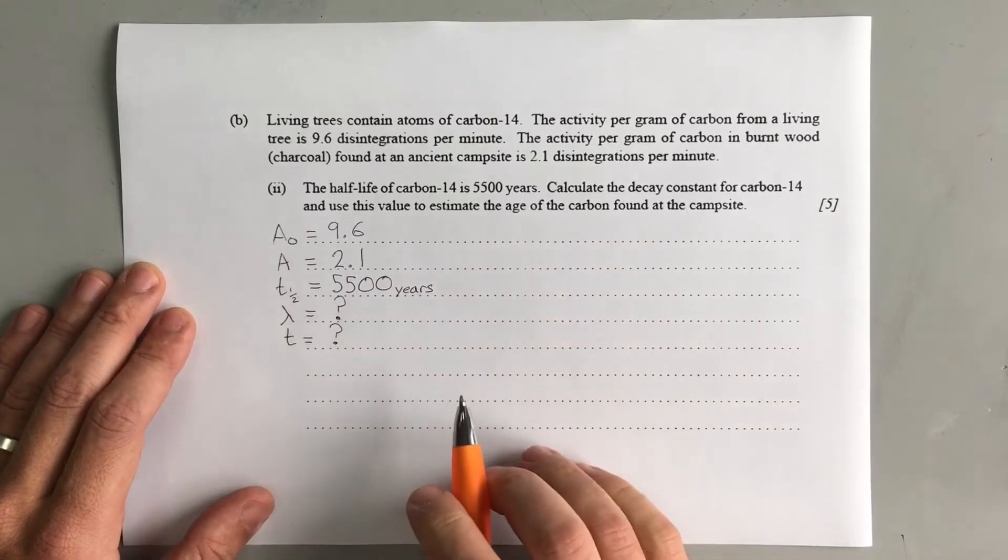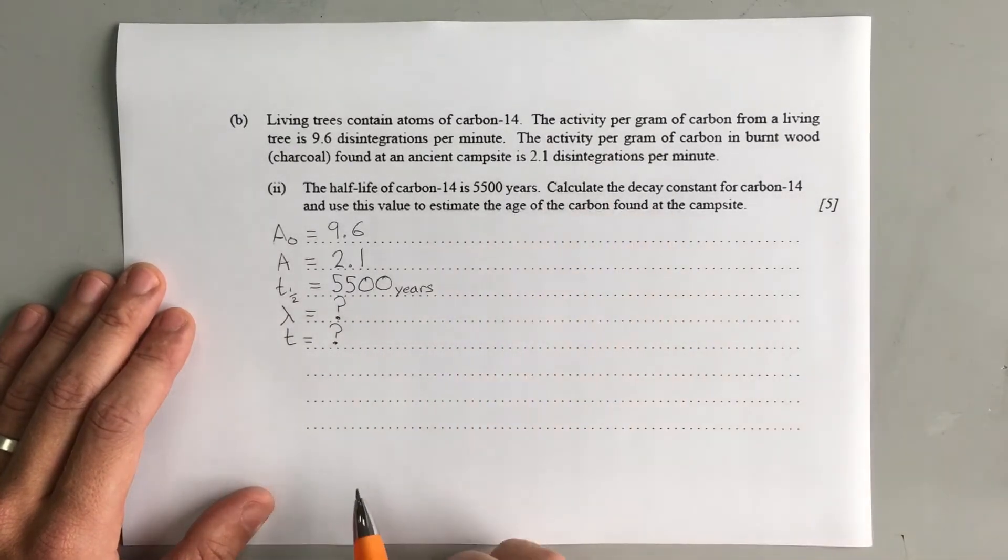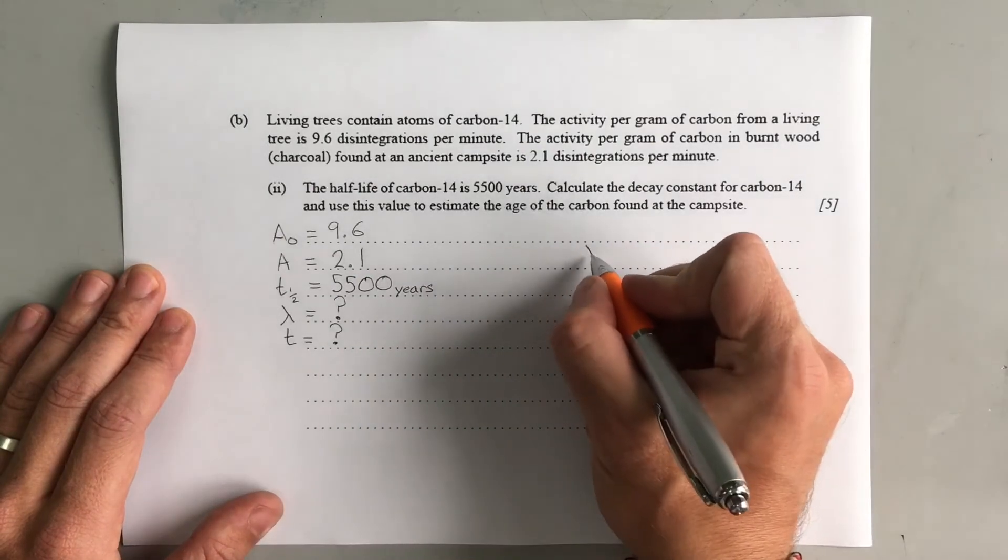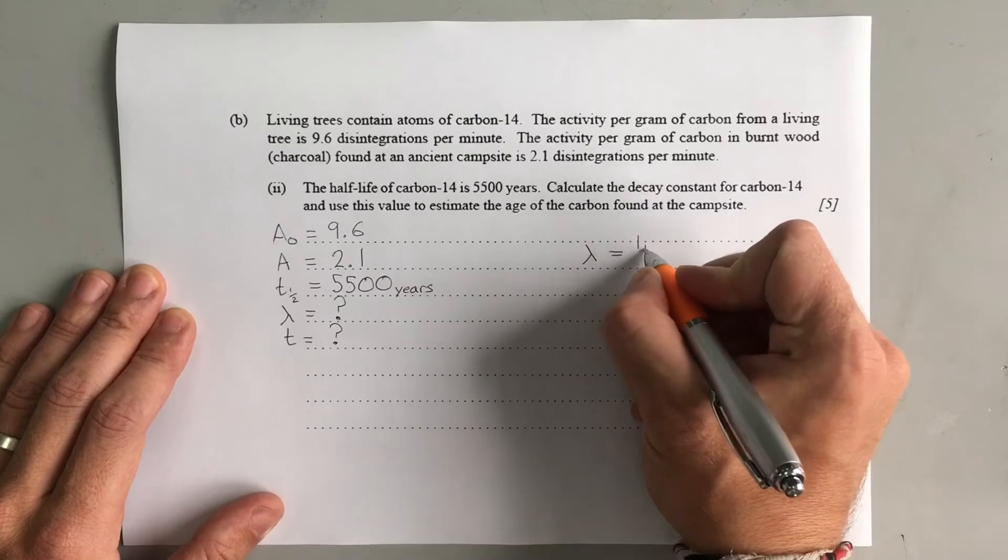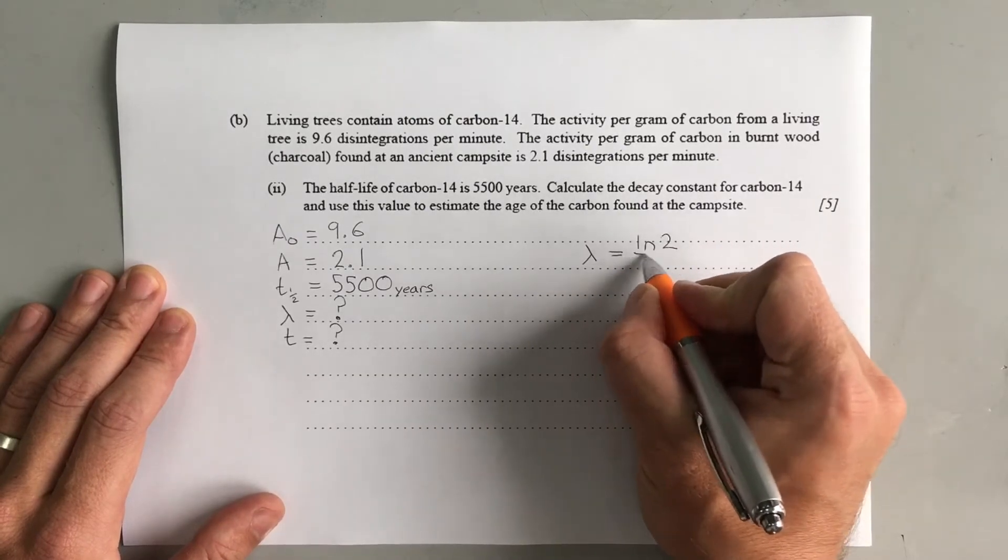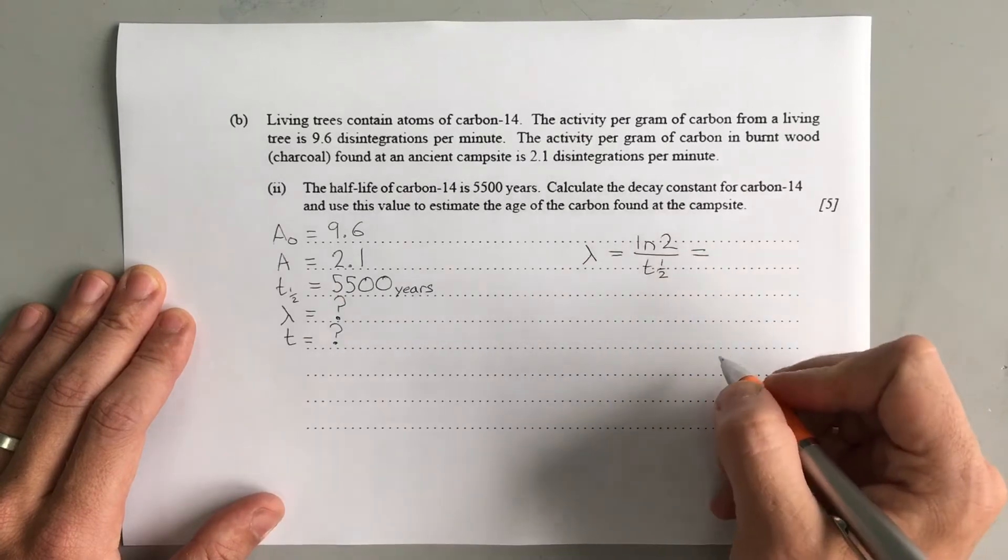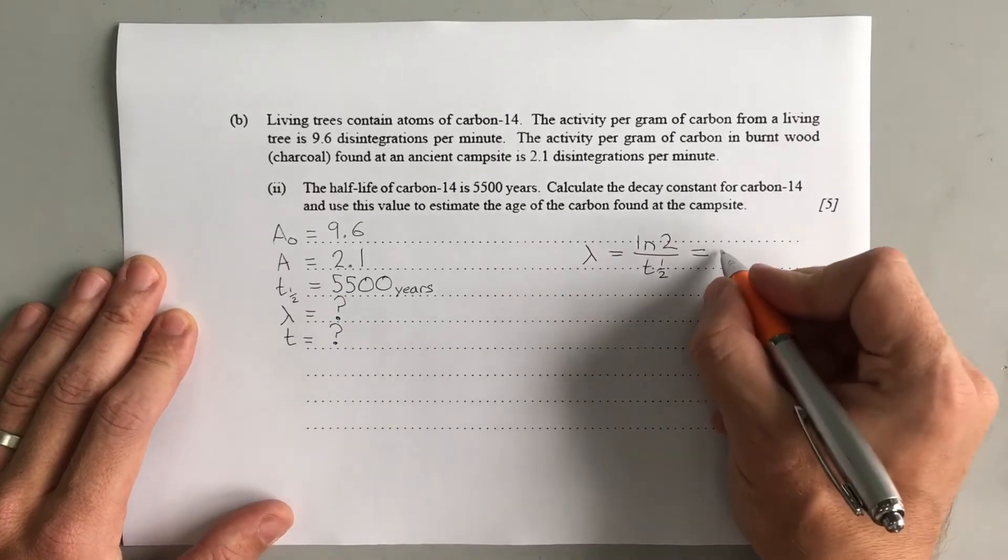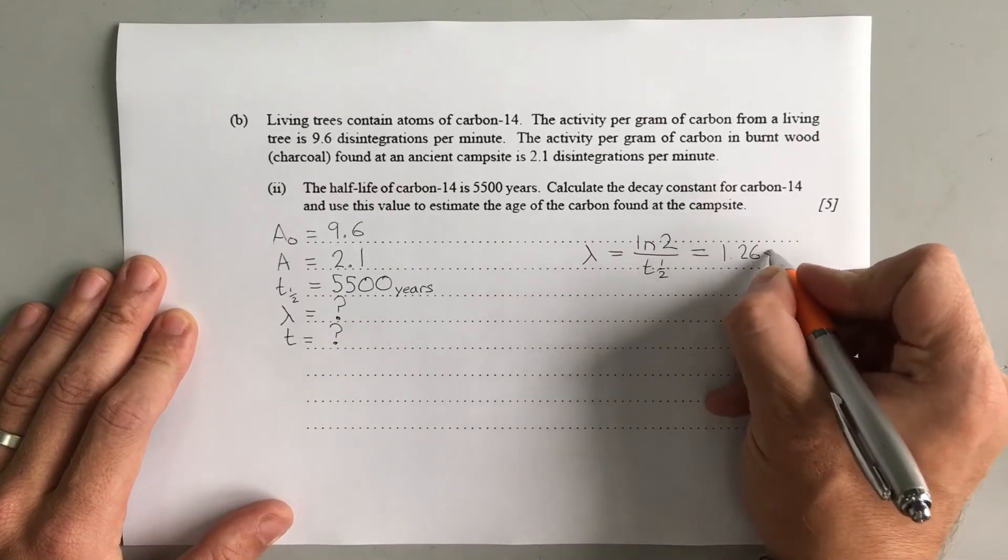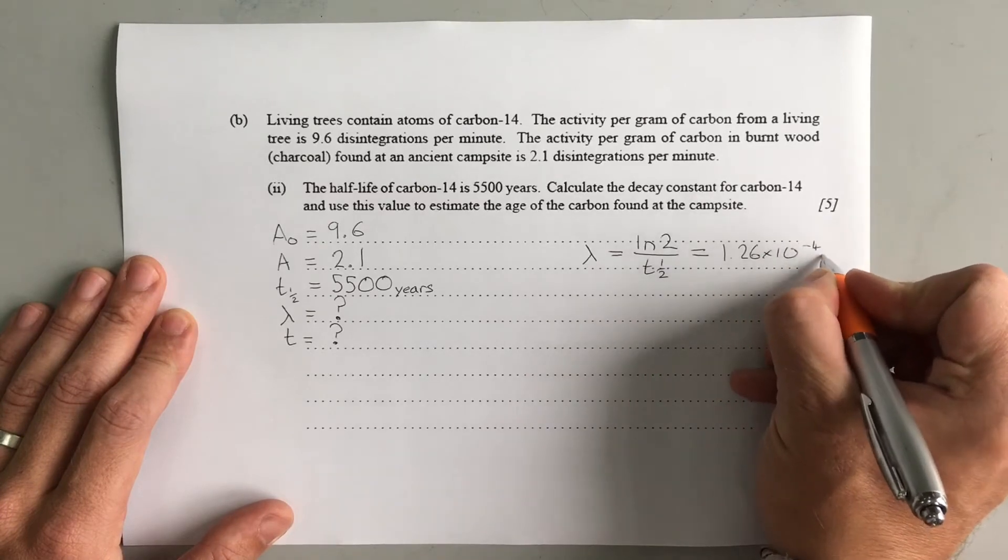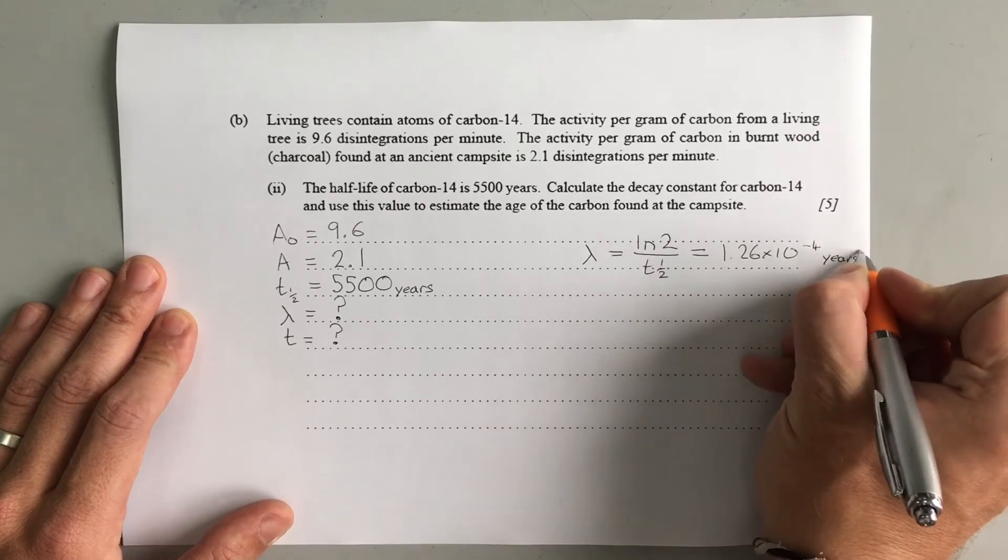Okay, well the first thing that we can do, like the question suggests, is find the decay constant first. So we know that our decay constant is the natural log of 2 divided by the half-life, and that gives us, if you put that in your calculator, about 1.26 × 10⁻⁴ years⁻¹.